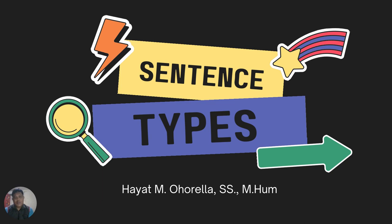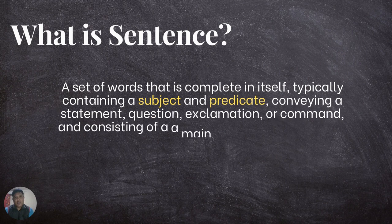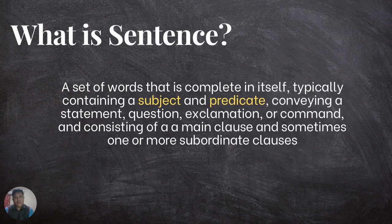Before going deeply into the types of the sentence, first of all we'd like to address the question: what is actually a sentence? A sentence is a set of words that is complete in itself. Typically it contains a subject and predicate. Sentences convey a statement, a question, an exclamation, or even a comment, and it consists of a main clause and sometimes one or more subordinate clauses.